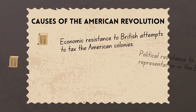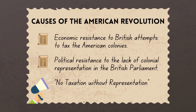The causes of the American Revolution, condensed to their simplest form, are economic resistance to Britain taxing the American colonies. Colonists began to say that's not okay — that Britain should not be able to tax them because they had no representation in the British Parliament, the body that creates laws for the entire British Empire. Because the colonists did not send a representative to England, they believed you should not be able to tax them, which is where the famous slogan 'no taxation without representation' was born.